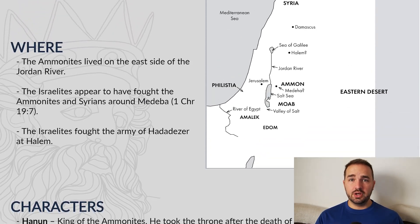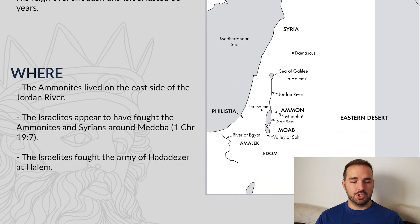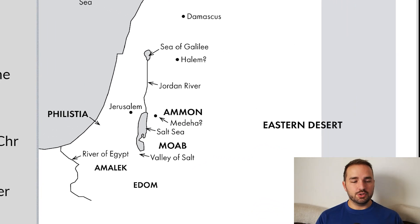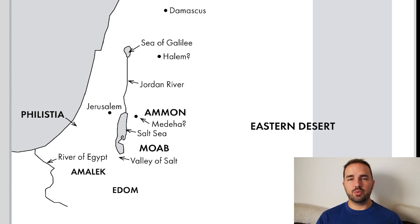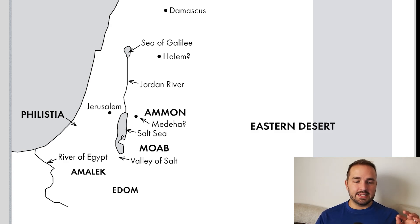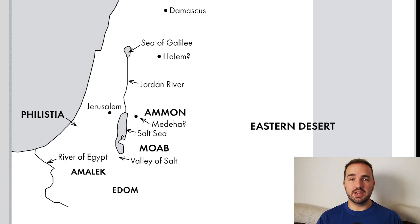Most historians think Zobah was somewhere in the territory of Syria, which you'll see on the map. The Ammonites lived on the east side of the Jordan River — you'll see their territory listed there on the right side of the Dead Sea. The Israelites appear to have fought the Ammonites and the Syrians around Medaba, based on 1 Chronicles 19 verse 7. And the Israelites fought the army of Hadad Ezer at Halam, which you'll see to the right of the Sea of Galilee.